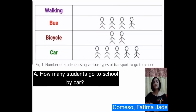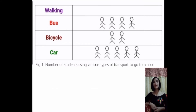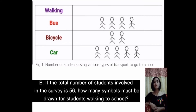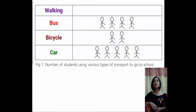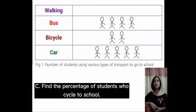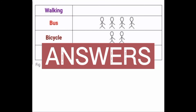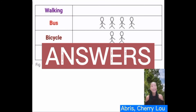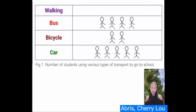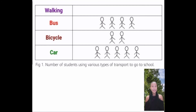Letter A: How many students go to school by car? Since 5 symbols multiplied by 4 is equal to 20, thus the answer is 20 students.